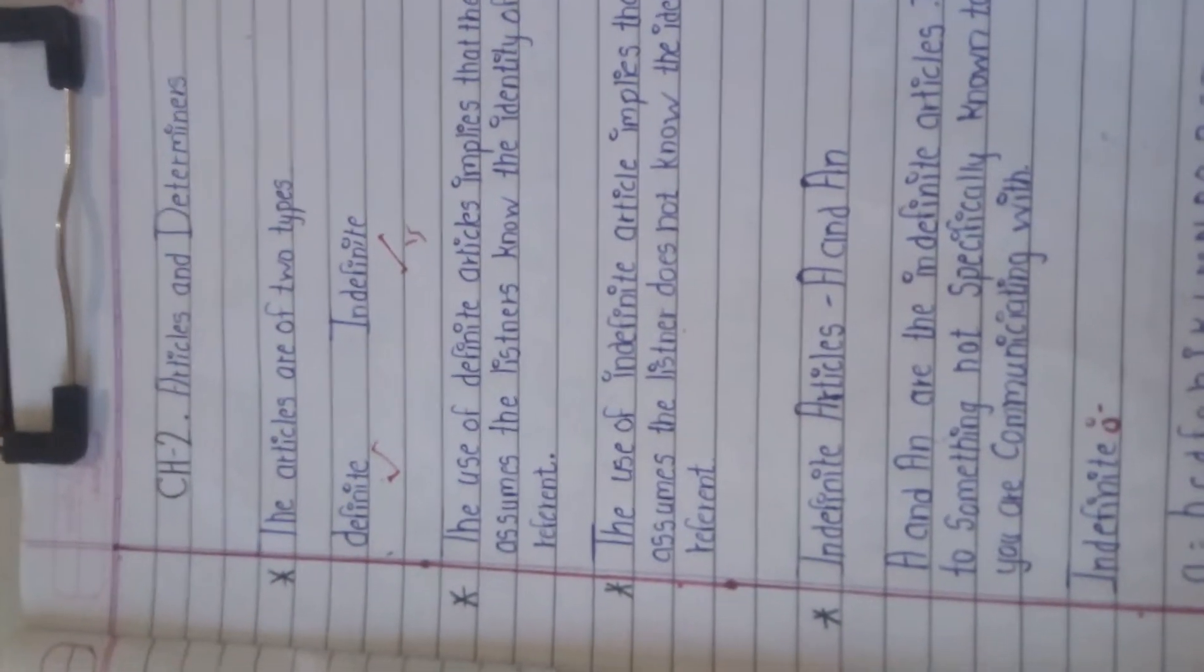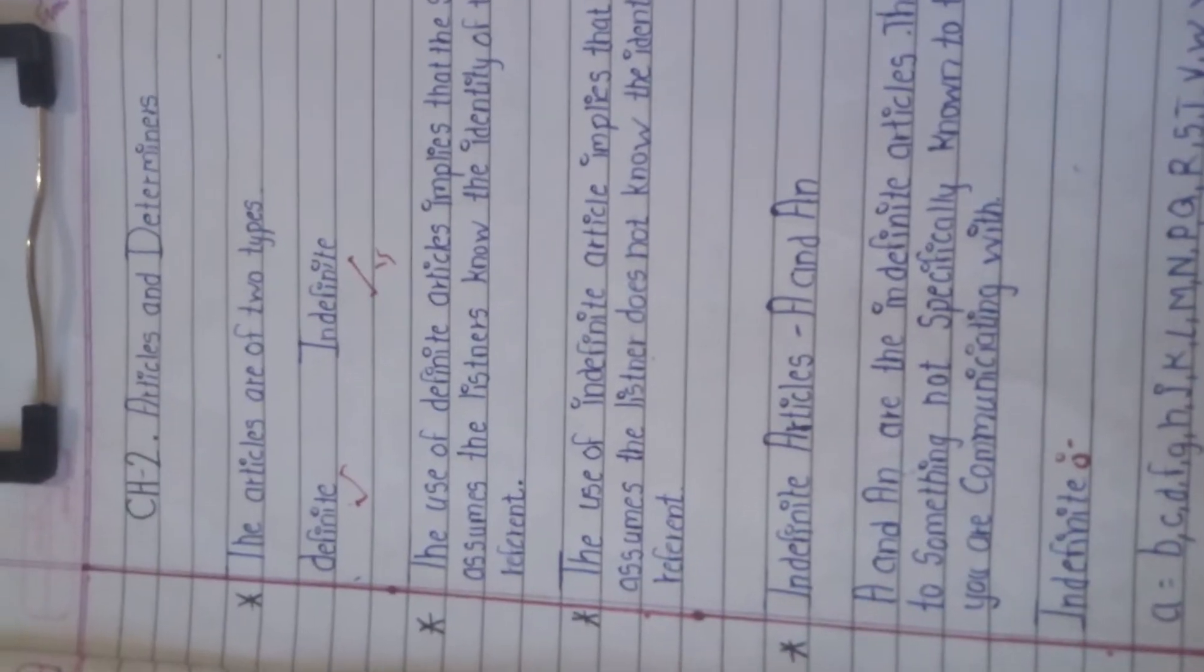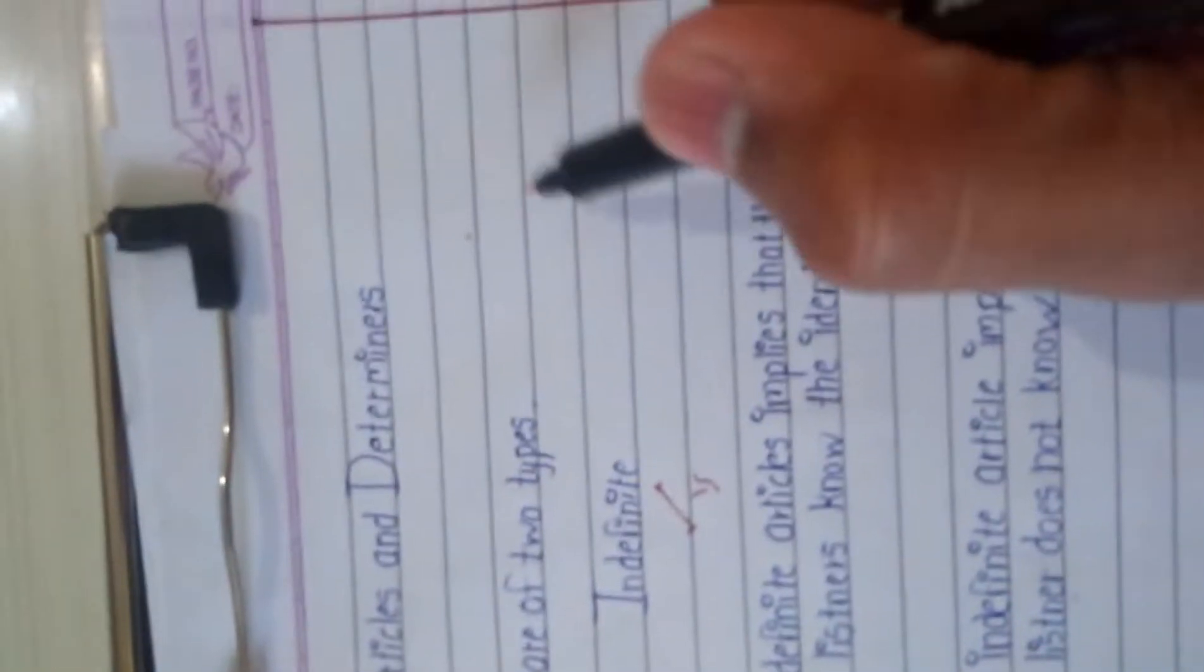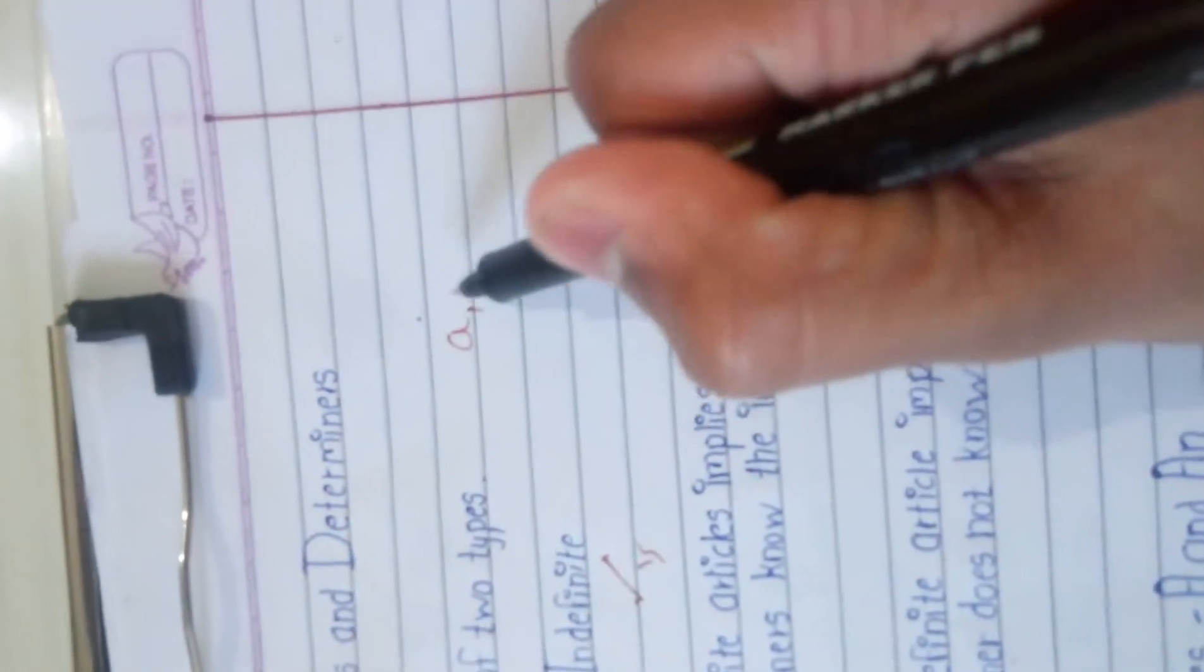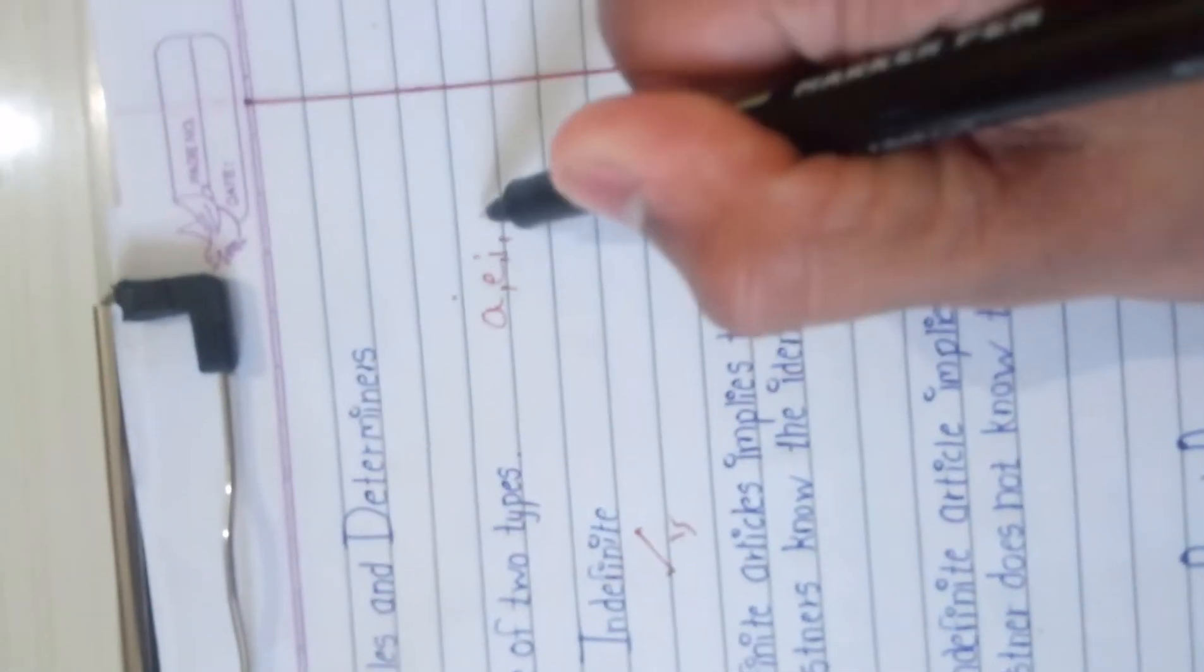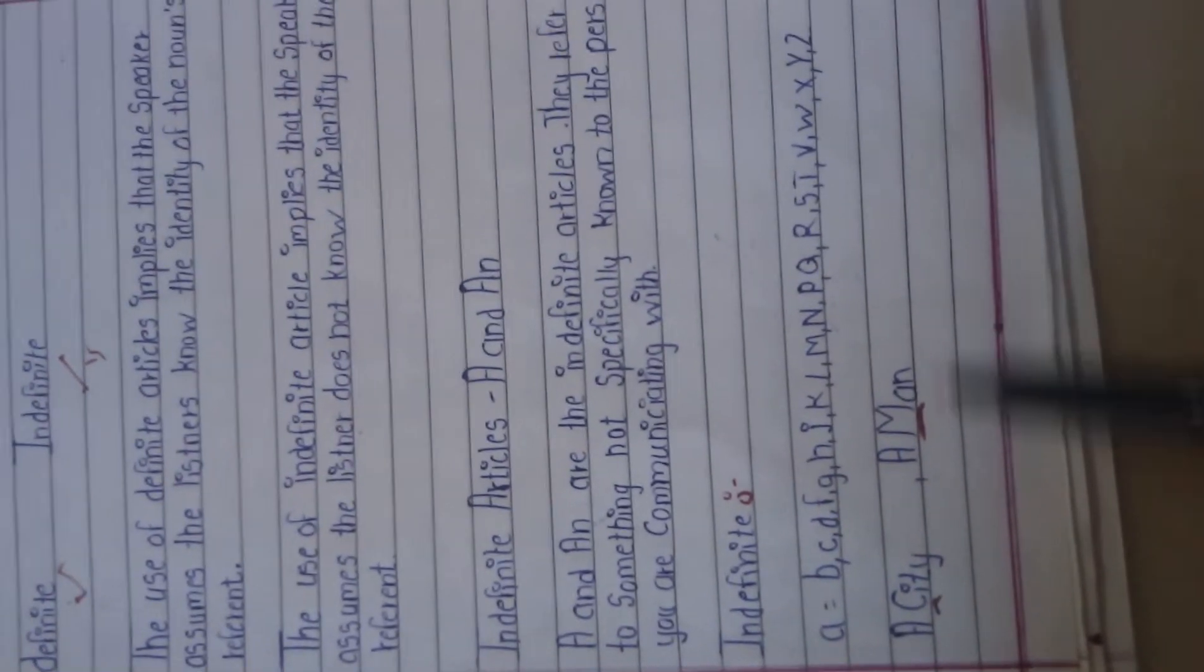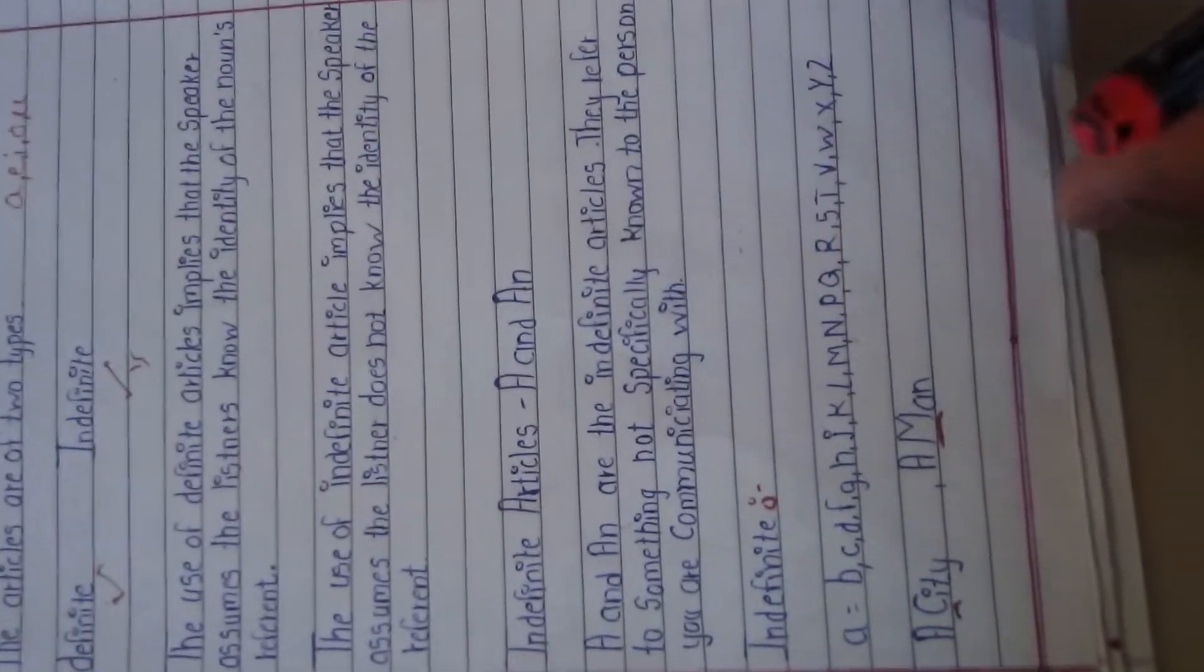AN is used before vowels like A, E, I, O, U. Examples of indefinite articles include: a man, a city.